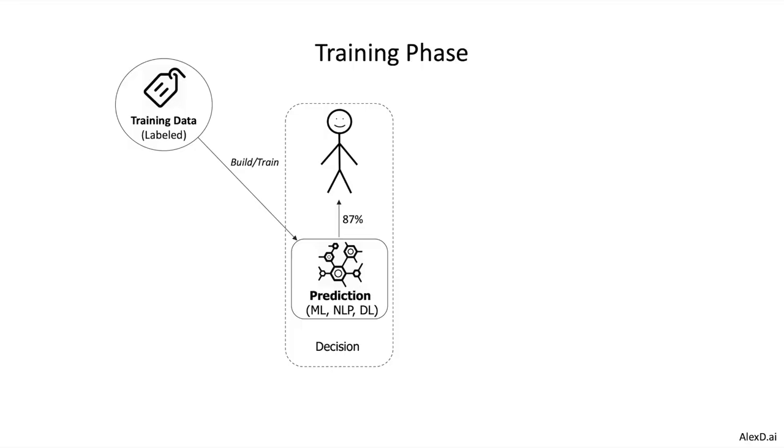Before we have this prediction model, we have to build it — we have to train it. We use training data with labeled data, in the case of supervised machine learning, and we use this kind of data to create and build a new model.